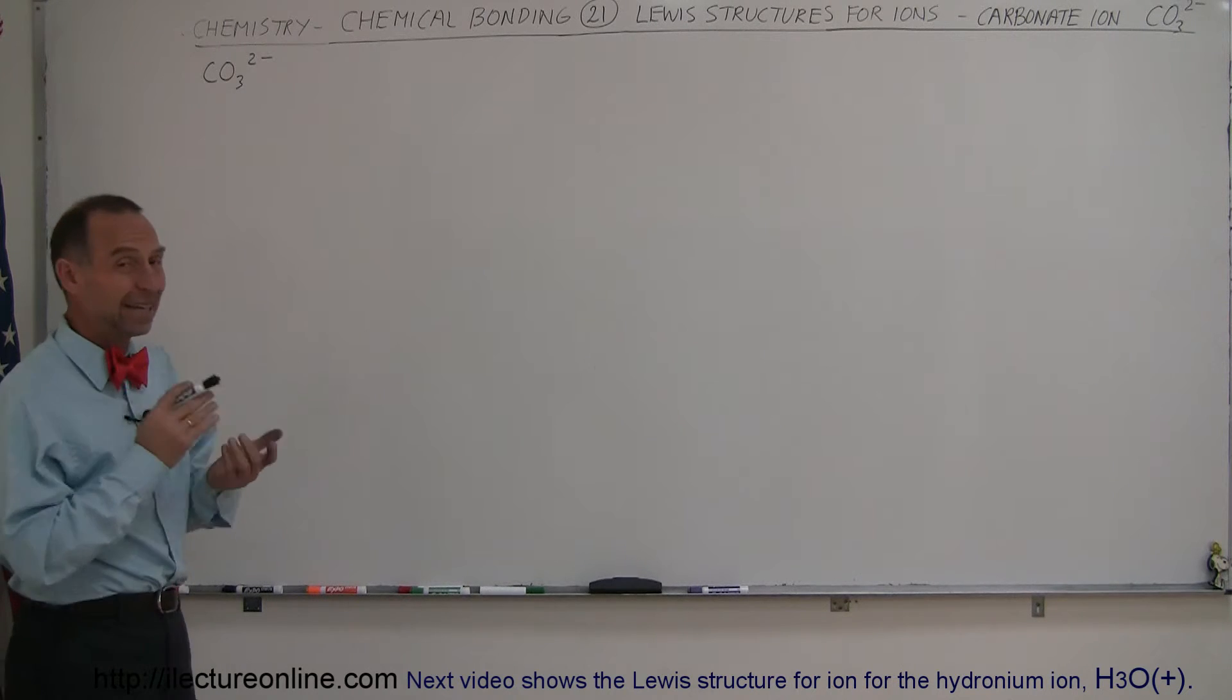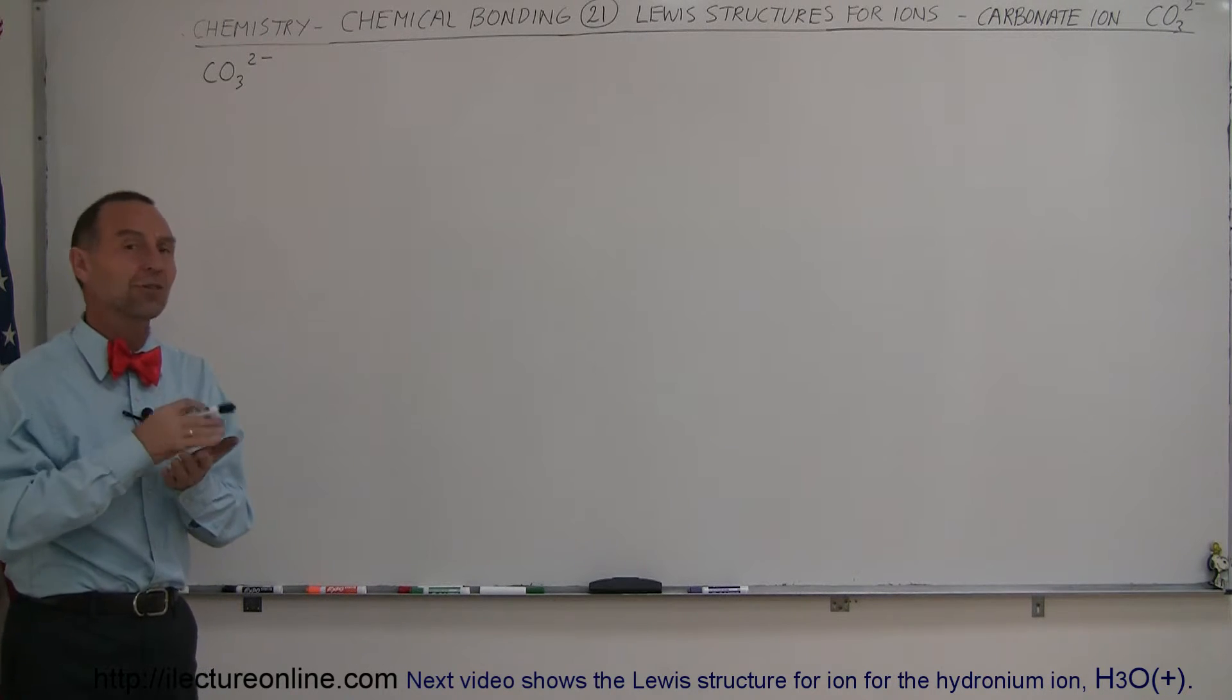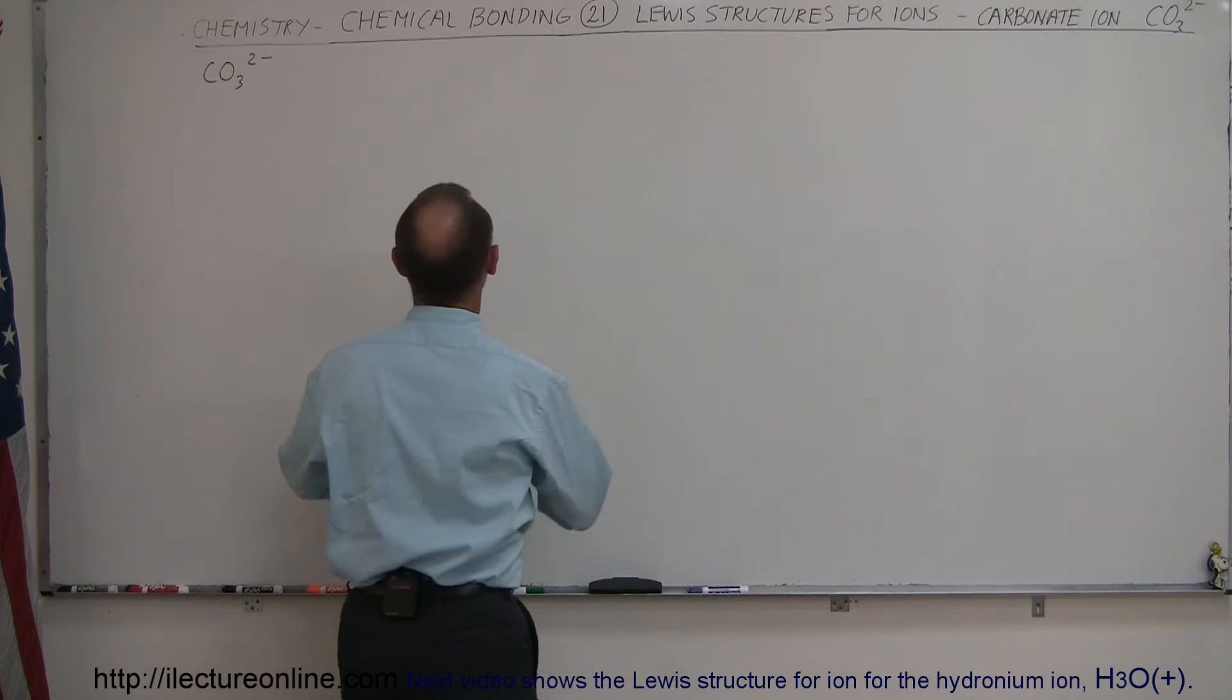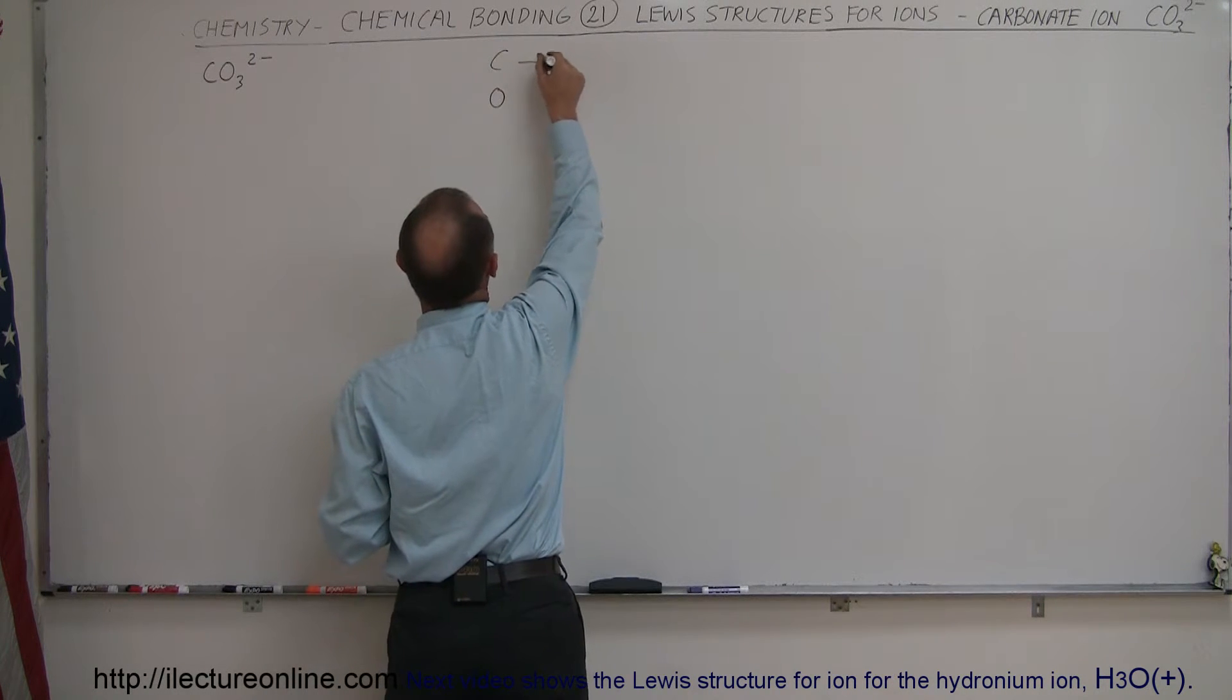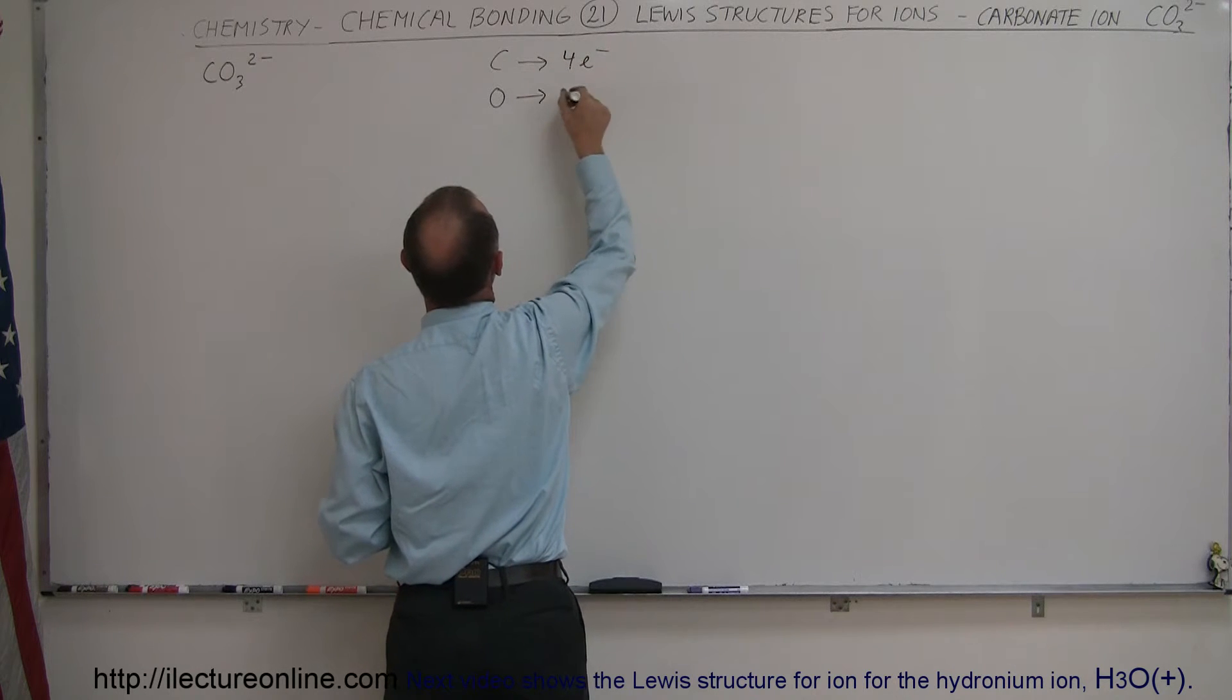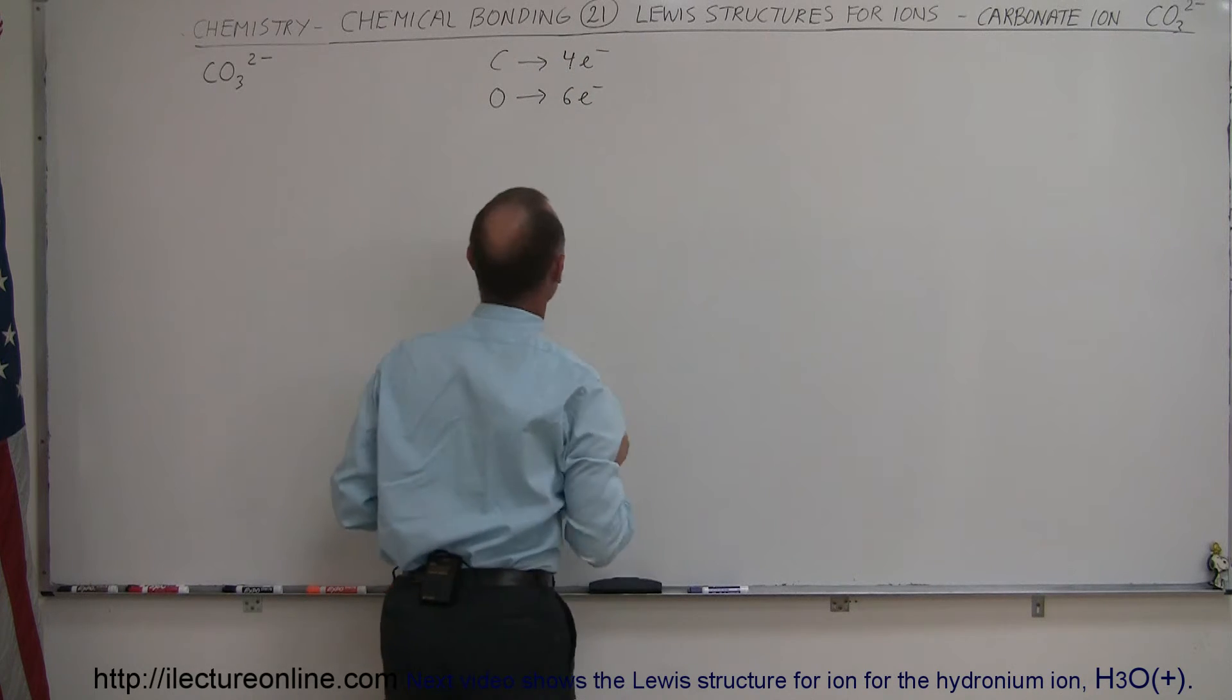Well, let's start out by simply identifying how many valence electrons are in each atom. Carbonate ion has one carbon and three oxygen atoms. The carbon atom has four valence electrons. The oxygen atom has six valence electrons.